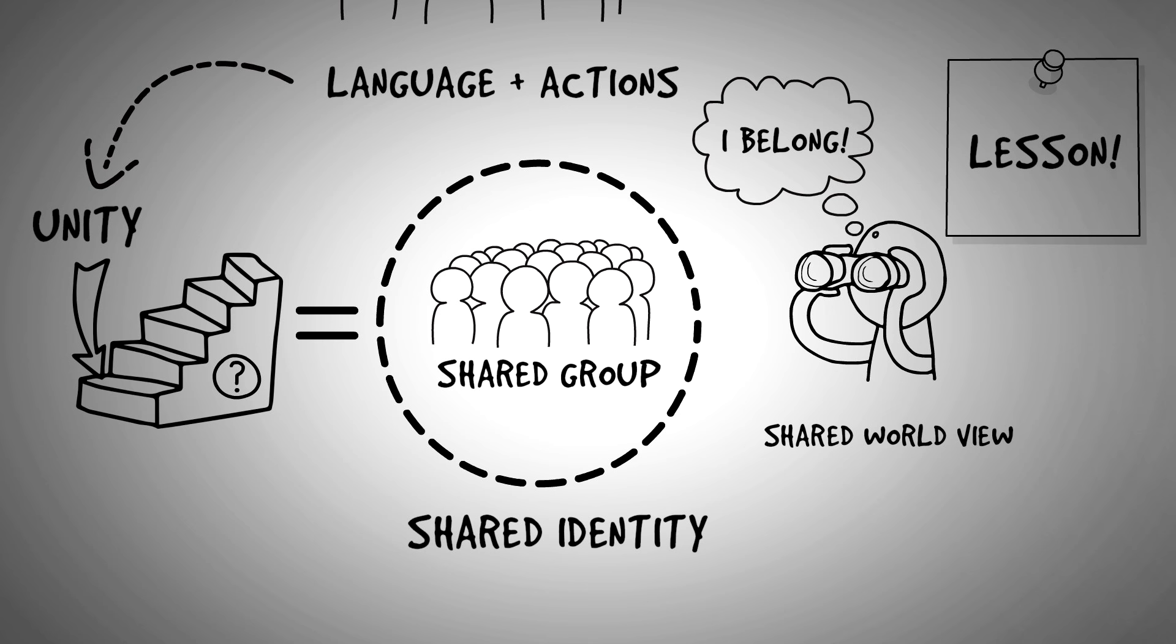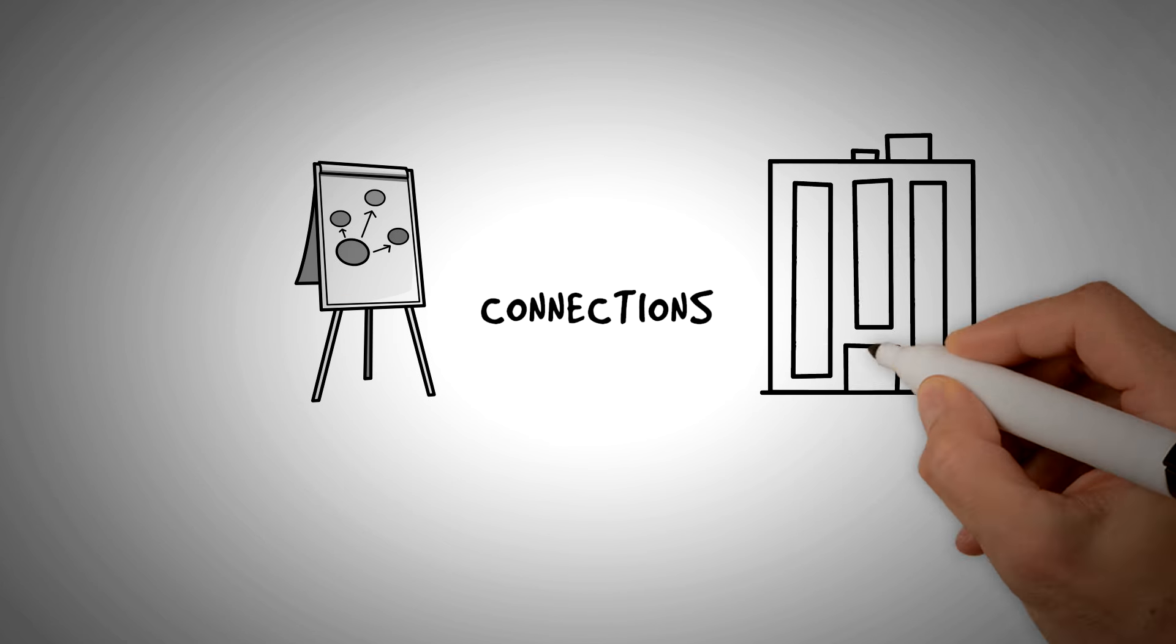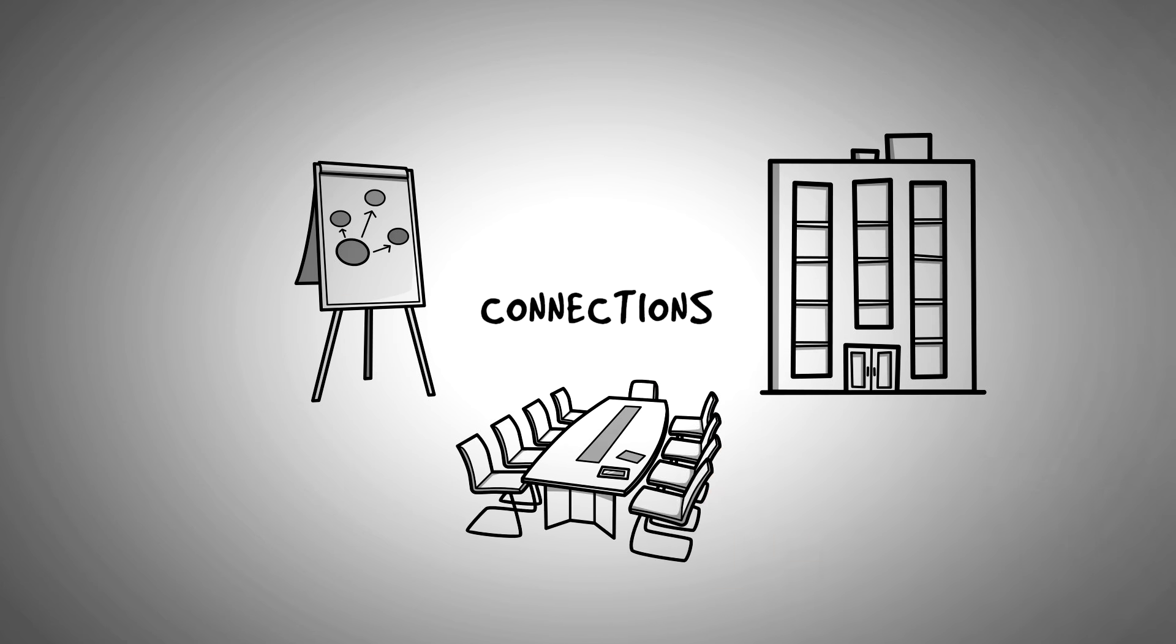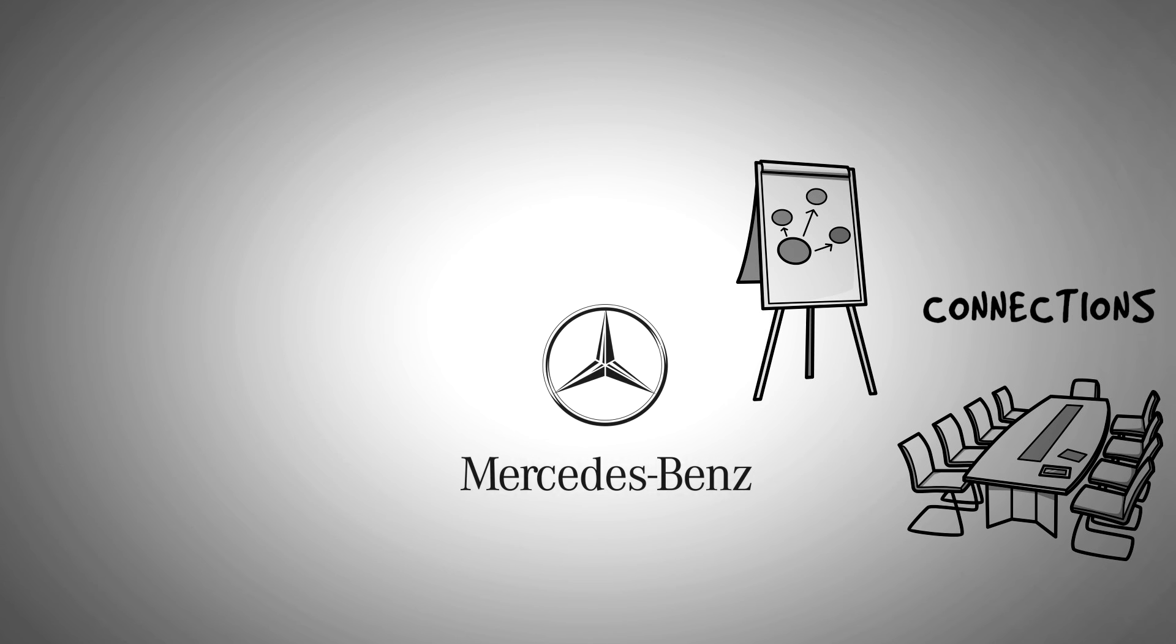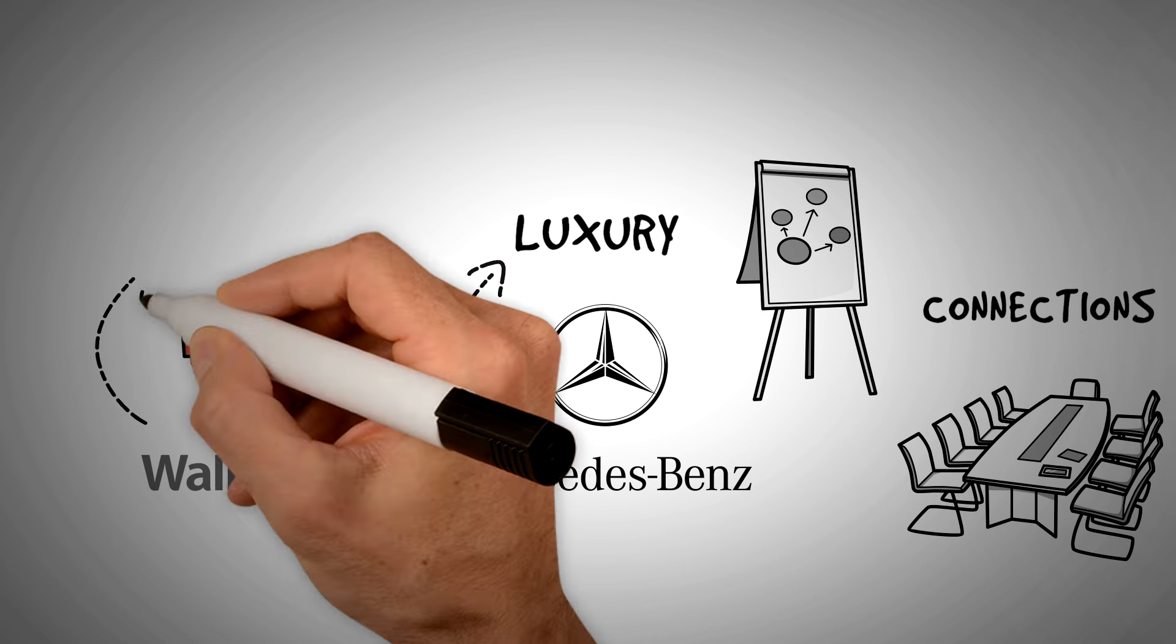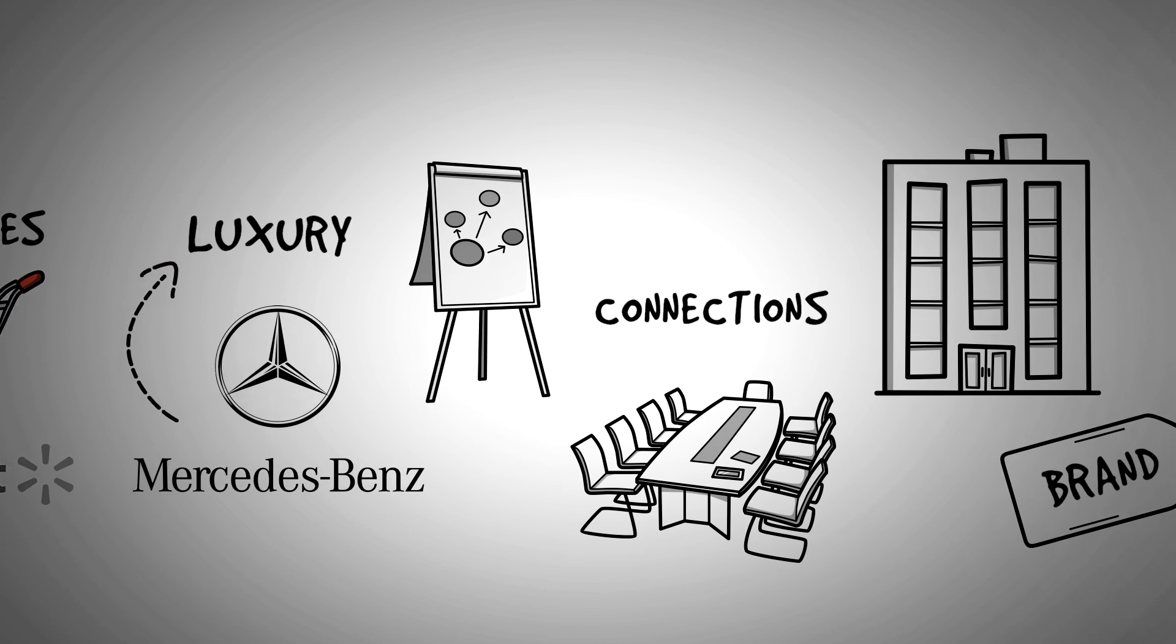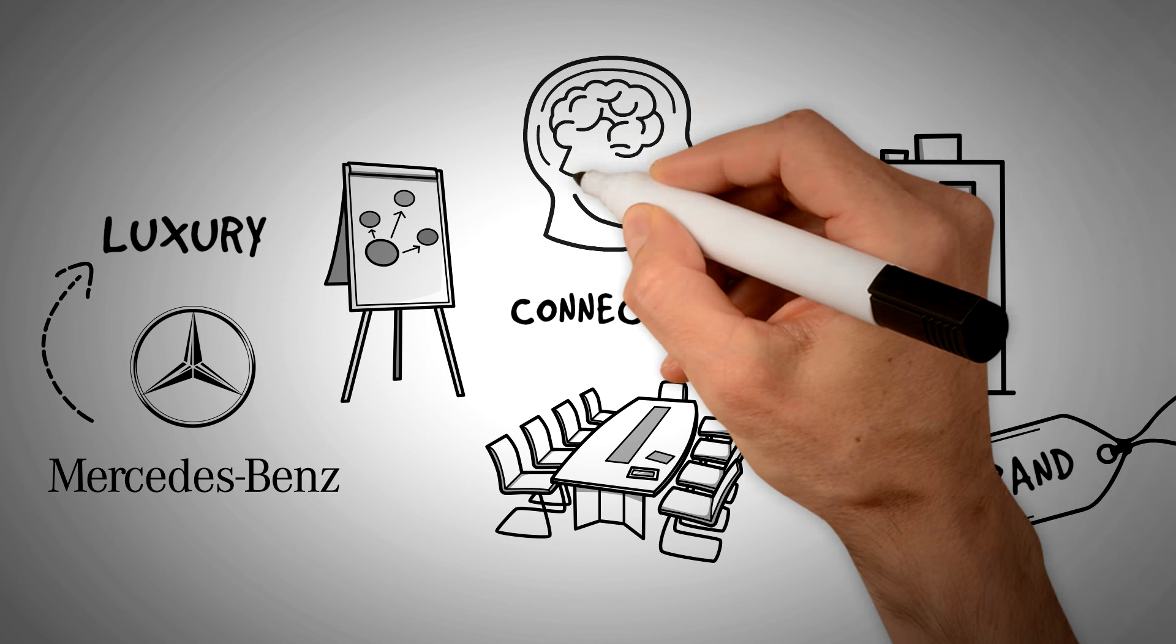And the final part of persuasion is connections. If you manage to engineer a new or a different connection, you can influence people much easier. Almost all big companies use this powerful tactic as part of their branding. This is why, when you think of Mercedes-Benz, for example, you think of luxury. And when you think of Walmart, you most likely think of convenience or low prices. These associations have been carefully crafted by creating connections in your mind.